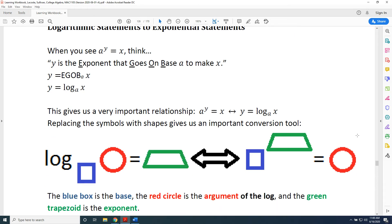This is called the converter, and the shapes get names. The blue box is the base. Notice that those all start with the letter B. The blue box is the base. The red circle is the argument of the log. And the green trapezoid is the exponent.